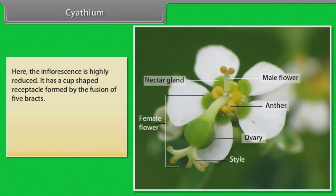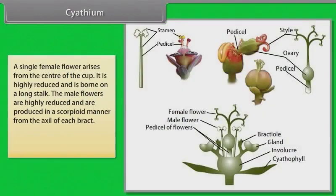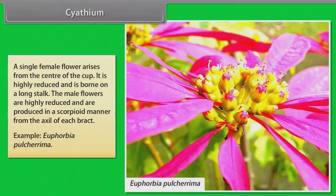In cyathium, the inflorescence is highly reduced. It has a cup-shaped receptacle formed by the fusion of five bracts. On the surface of this cup, generally a yellow colored nectar-secreting gland is present. A single female flower arises from the center of the cup — it is highly reduced and is born on a long stalk. The male flowers are highly reduced and are produced in a scorpioid manner from the axil of each bract. Example: Euphorbia pulcherrima.